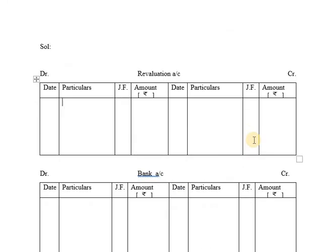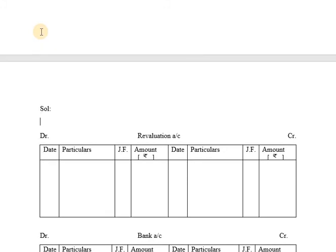The first account that we prepare is the revaluation account. The format for revaluation account includes: Date, Particulars, JF (journal folio), Amount Rupees — on both debit and credit sides. Towards the extreme left we write DR (Debit) and towards the extreme right we write CR (Credit).